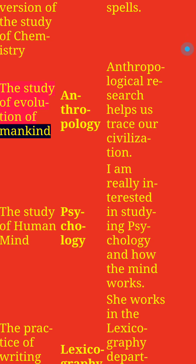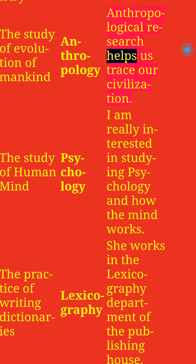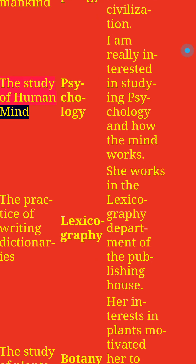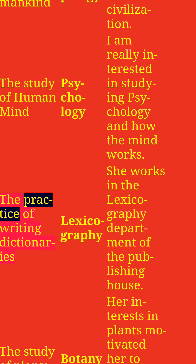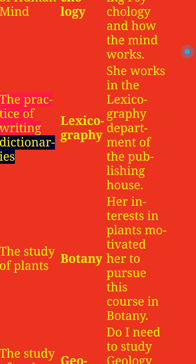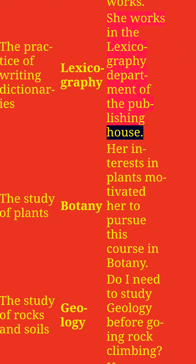The study of evolution of mankind: Anthropology. Anthropological research helps us trace our civilization. The study of human mind: Psychology. I am really interested in studying psychology and how the mind works. The practice of writing dictionaries: Lexicography. She works in the lexicography department of the publishing house.